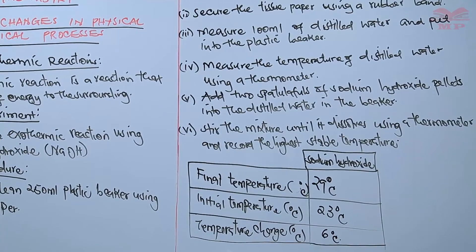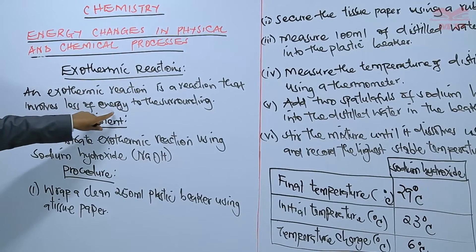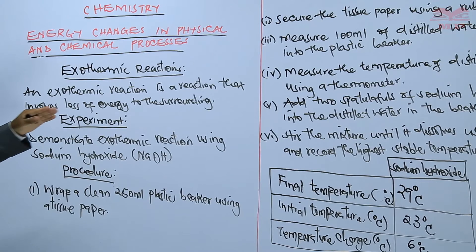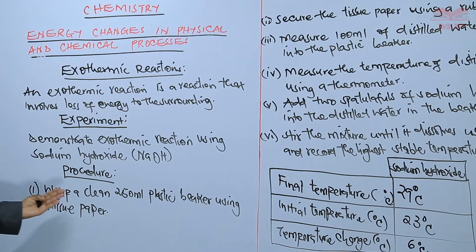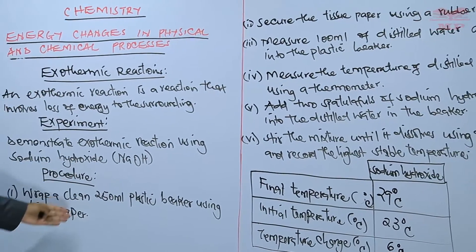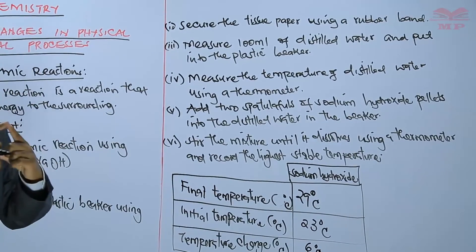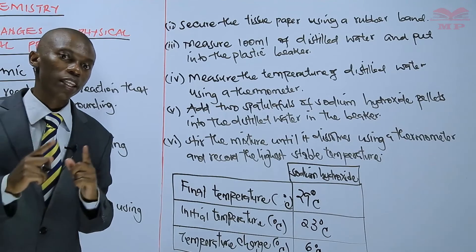Just to recap: an exothermic reaction is a reaction that involves loss of energy, and this energy is lost in the form of heat to the surrounding. You can demonstrate this using sodium hydroxide solid. Procedure one: wrap a plastic beaker of 250 ml volume using a tissue paper, to prevent gain or loss of heat to the surrounding. Procedure two: secure the tissue paper using a rubber band so it does not come off the plastic beaker.